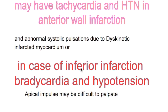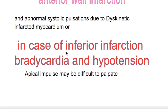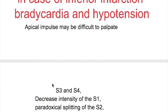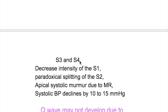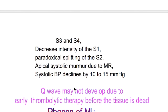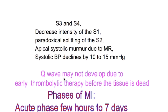In inferior infarction, there are features of parasympathetic nervous system activity: bradycardia and hypotension. The apical pulse may be difficult to palpate. Third and fourth heart sounds are present. There is decreased intensity of the first heart sound and paradoxical splitting of the second heart sound. There may be an apical systolic murmur due to mitral regurgitation, and systolic blood pressure may decline by 10–15 mmHg.